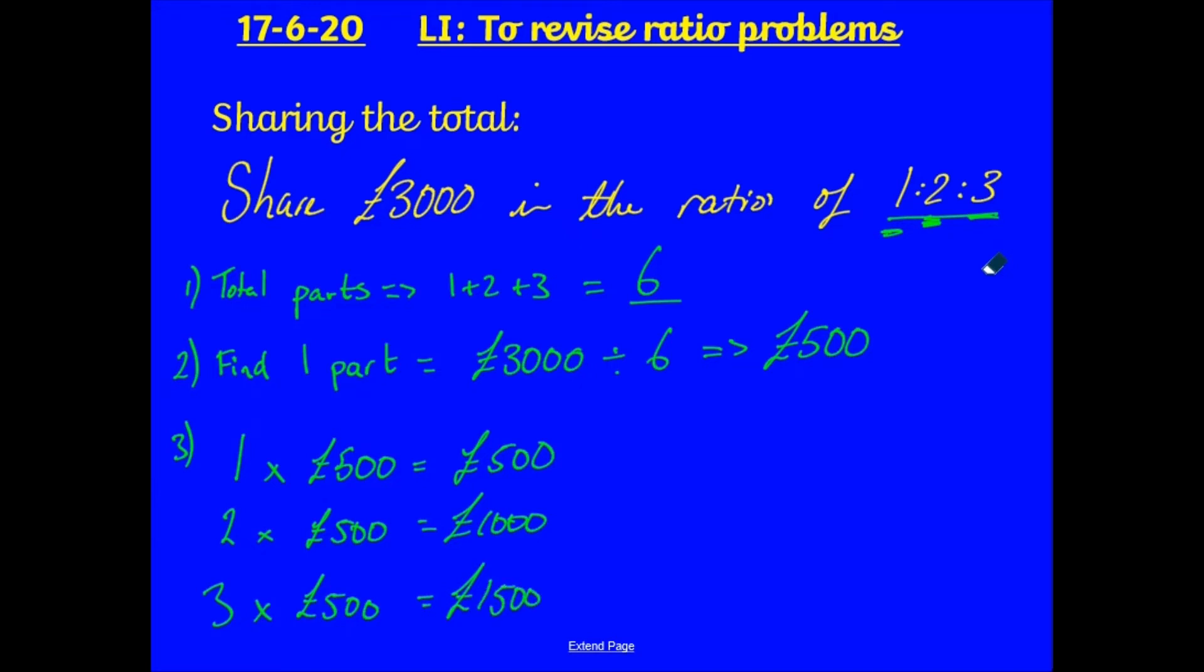Now, there's no names here. I can't give any names and values to split this to. So, how I can write this is I can write, share £3,000 as a ratio of 1 to 2 to 3. That would be £500, £1,000, and £1,500. There we go. There is my answer. Solved.